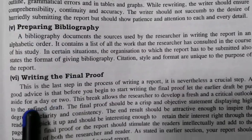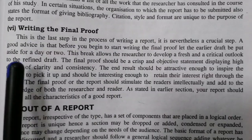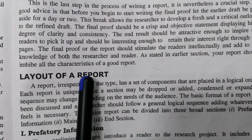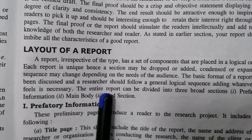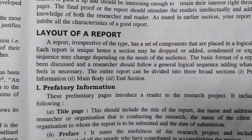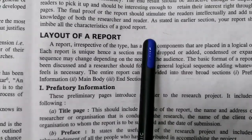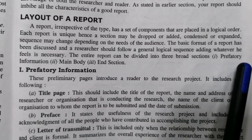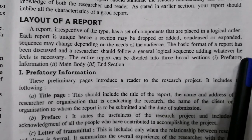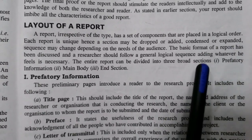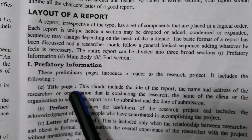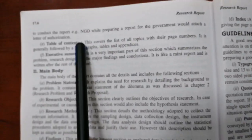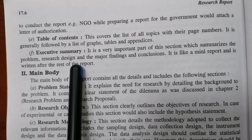Next, we write the final proof of the report. We discuss the steps of the layout and divide the report into three sections: Prefatory Information, Main Body, and End Section. The Prefatory section includes the Title Page, Preface, Letter of Transmittal, Letter of Authorization, Table of Contents, and Executive Summary.